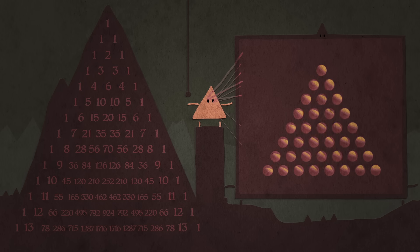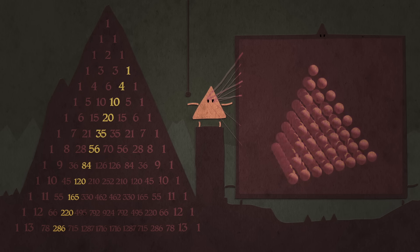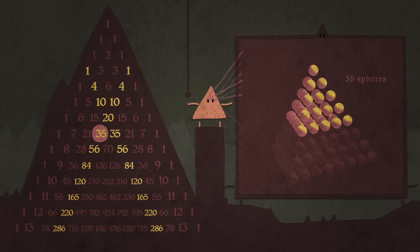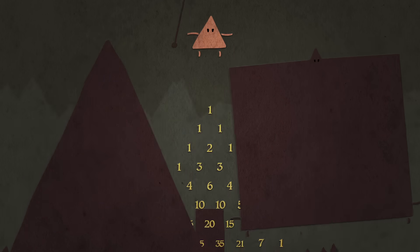The next diagonal has the tetrahedral numbers, because similarly, you can stack that many spheres into tetrahedra.